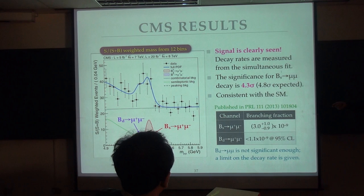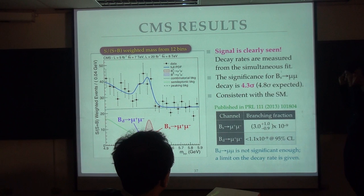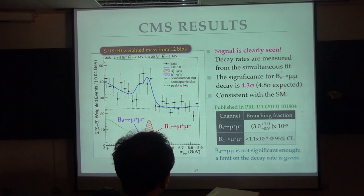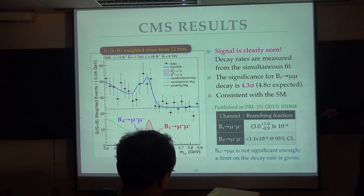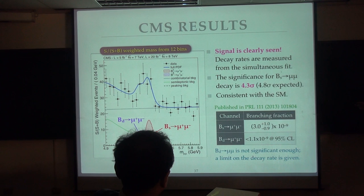So the significance for BS to mu mu is originally like a 4.3 sigma. It's not yet observed in terms of our so-called standard value, but we do expect to be about to be observed that we're almost expecting 5 sigma. So we're expecting 4.8, we see 4.3. And this is our measurement. And for BD to mu mu, actually we do not have any thickness. It's only like 2 sigma. So basically we give an upper measurement. So this is the CMS result, already published in PRL in 2013.